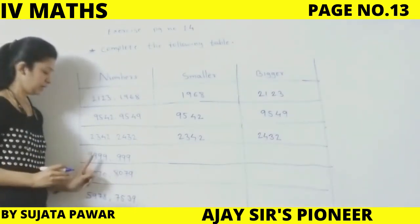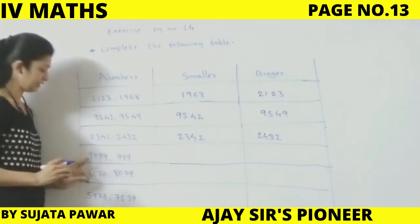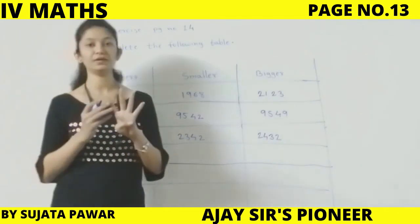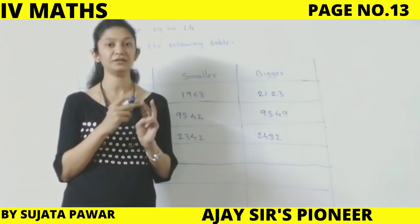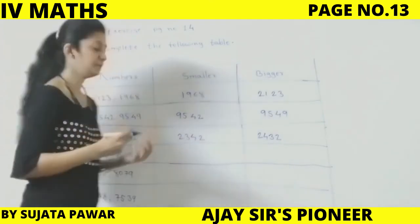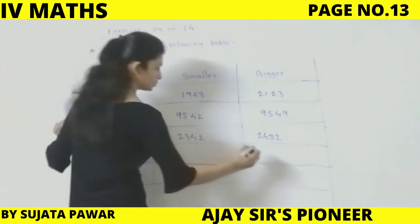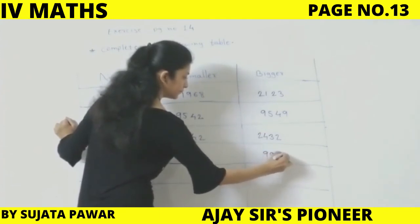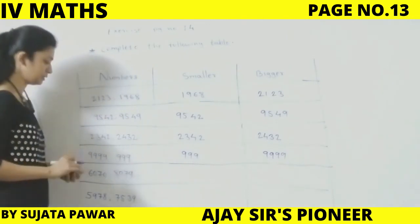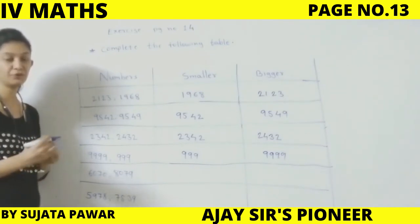Next: 9,999 and 999 — here we have a 4-digit number and a 3-digit number. A 4-digit number has a 1000s place, while a 3-digit number only has up to 100s. So the 4-digit number is always bigger than a 3-digit number. Therefore 9,999 goes in the bigger column and 999 in the smaller column. Aapko digits pe bhi dhyan dena hai — agar 3 digit aur 4 digit hoti hai, to hum easily smaller bigger find kar sakte hain.